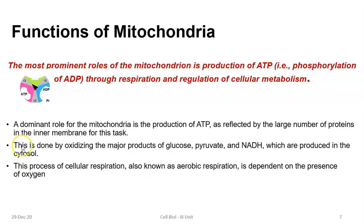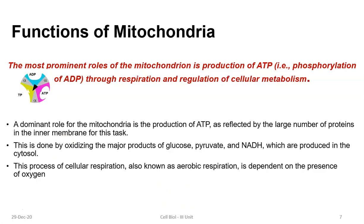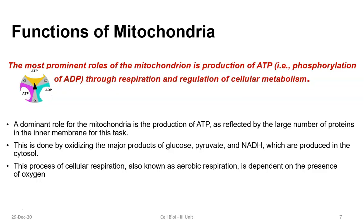The next function is the oxidation of major products of glucose — pyruvate and NADH — which are produced in the cytosol and are sent into the mitochondria for final oxidation in the electron transport chain. This process of cellular respiration is technically called aerobic respiration, because oxygen serves as the terminal electron acceptor on the respiratory chain, making the whole process dependent on the presence of oxygen.